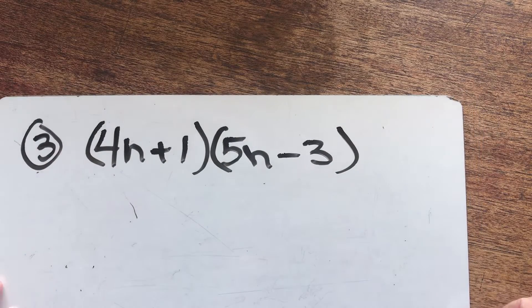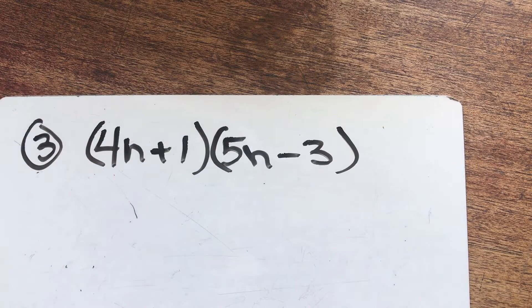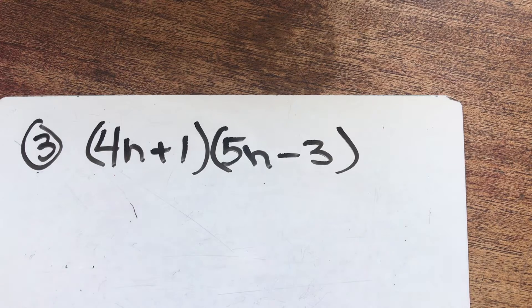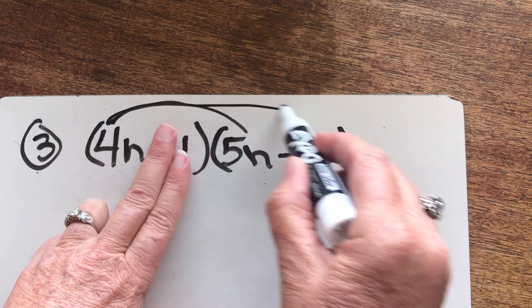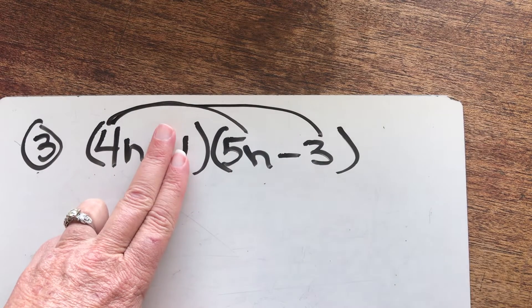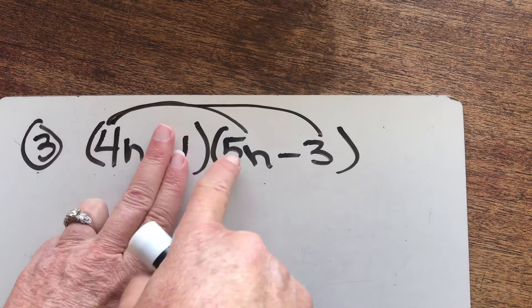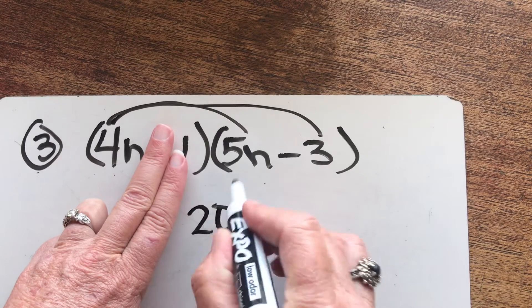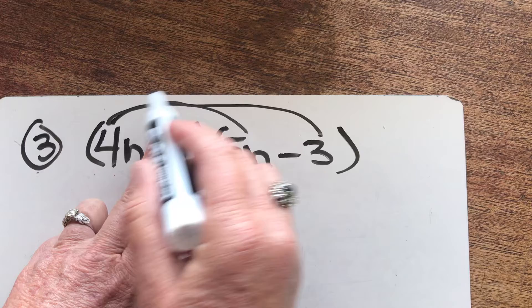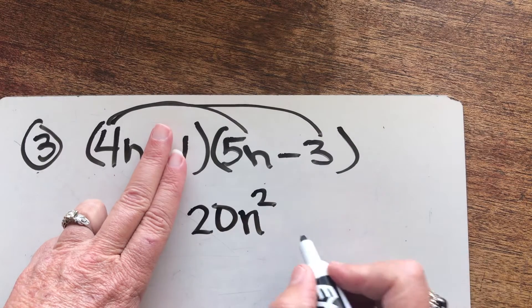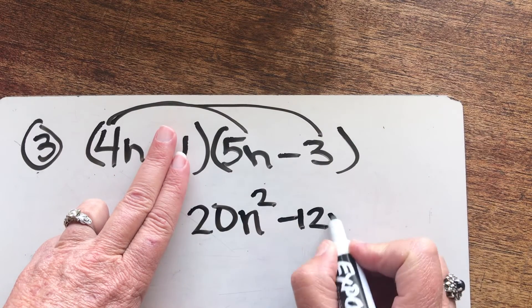Maybe I'll try a different technique this time. How about I use that cover and distribute technique? So I'm going to cover the one, and I'm going to distribute the first term to my second binomial. So four times five, 20. N times N, N squared. Four times negative three, you'll be careful with that sign. It's going to be negative 12 N.